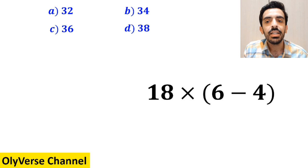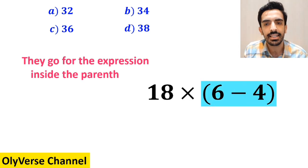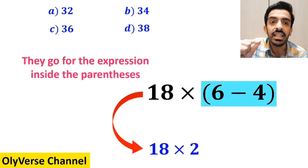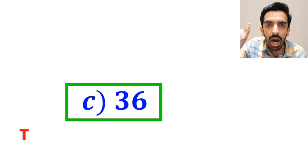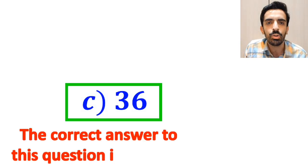And the final step, they go for the expression inside the parenthesis, and replace it with 18 times 2, which ultimately gives them the answer 36. And without any hesitation, they quickly say that option C is the correct answer to this question.